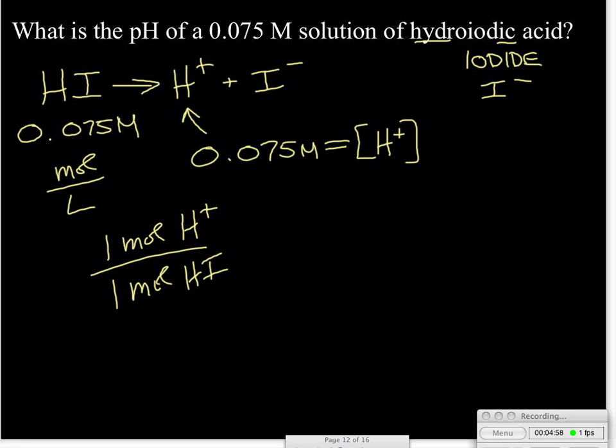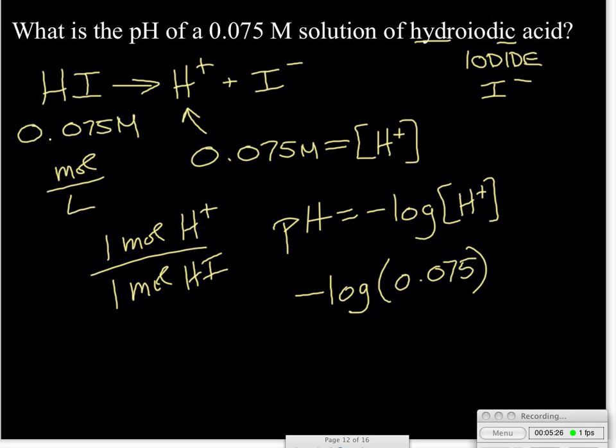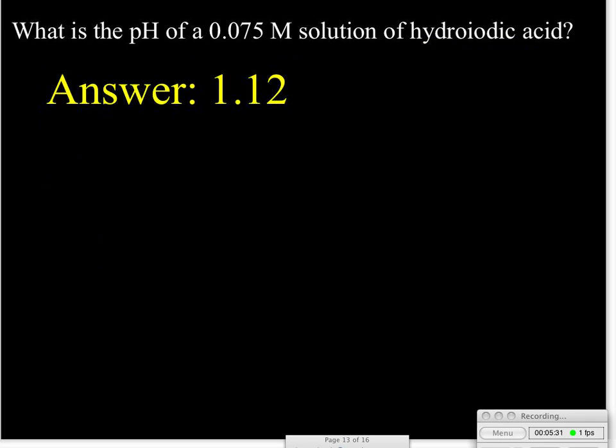And since we're trying to find the pH, we know that the pH is equal to a negative log of the concentration of the hydrogen ion. So we can go ahead and find the negative log of 0.075. And when we calculate that out, we find our answer is 1.12 for the pH.